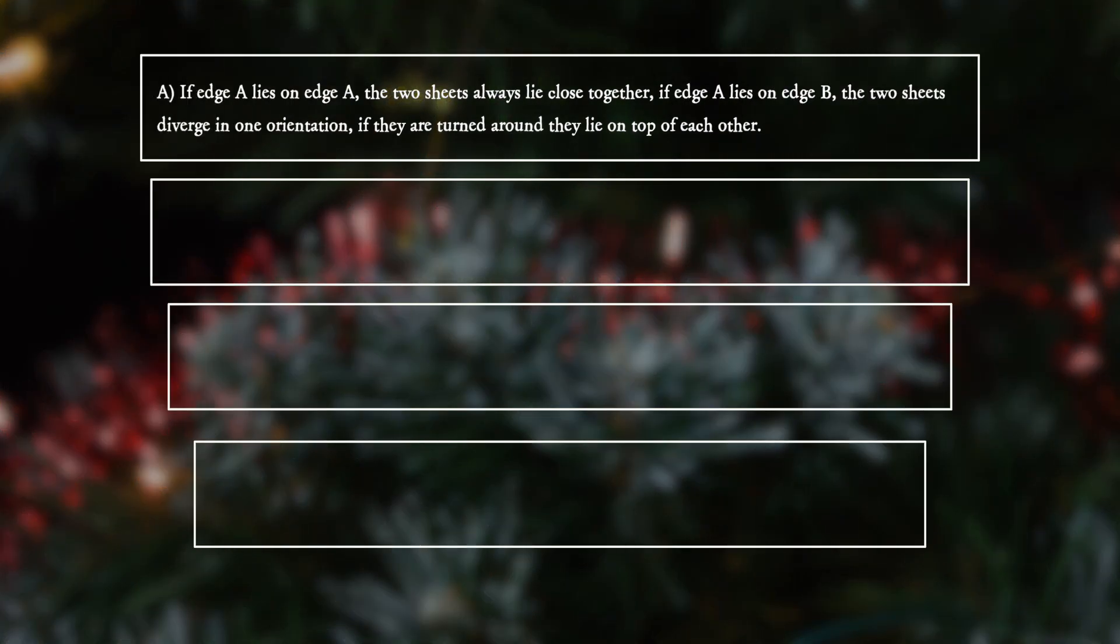Option A: If edge A lies on edge A, the two sheets always lie close together. If edge A lies on edge B, the two sheets diverge in one orientation. If they are turned around, they lie on top of each other.